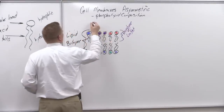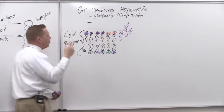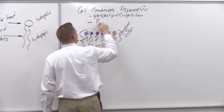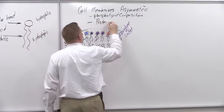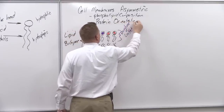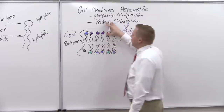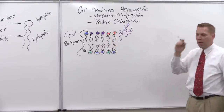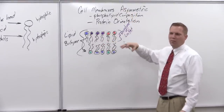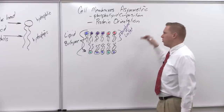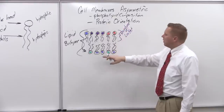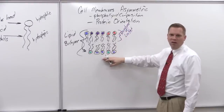Another way the two sides of the membrane differ is through protein orientation. The proteins embedded in the membrane face either the outside or the inside, and that varies. So if you were to walk along the outer surface of the membrane, it would look very different than walking along the inner surface.